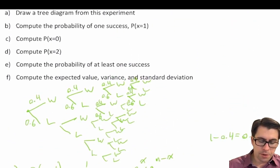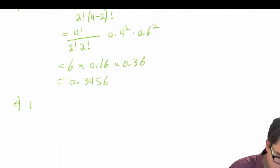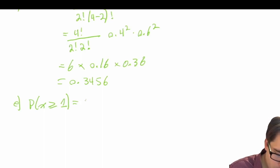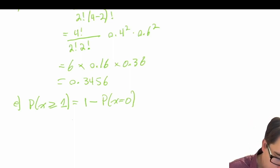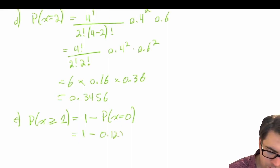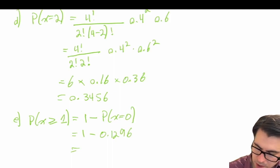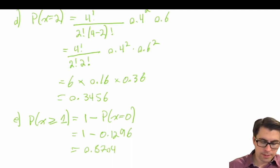Compute the probability of at least one success. P(X ≥ 1) equals 1 minus P(X = 0). If we have at least one success, we're not in the situation where there are no successes. We already calculated P(X = 0) = 0.1296, so 1 minus 0.1296 gives us 0.8704. That's our answer.